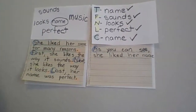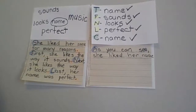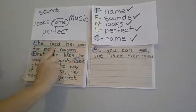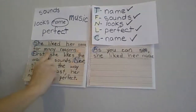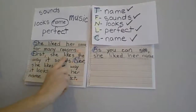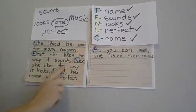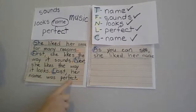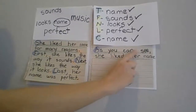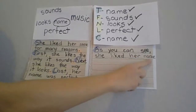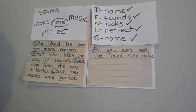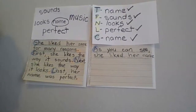The last thing we're going to do is read through it to make sure it makes sense. Finger on the first word, read with me: She liked her name for many reasons. First, she likes the way it sounds. Next, she likes the way it looks. Last, her name was perfect. As you can see, she liked her name. We are finished with our paragraph. You may take a picture of it and send it to me on Class Dojo.